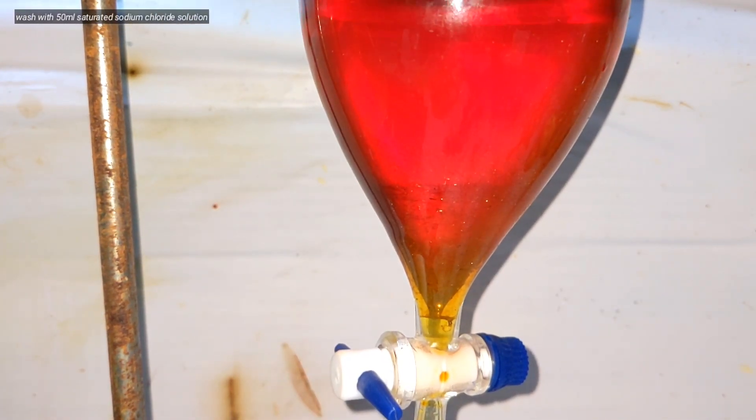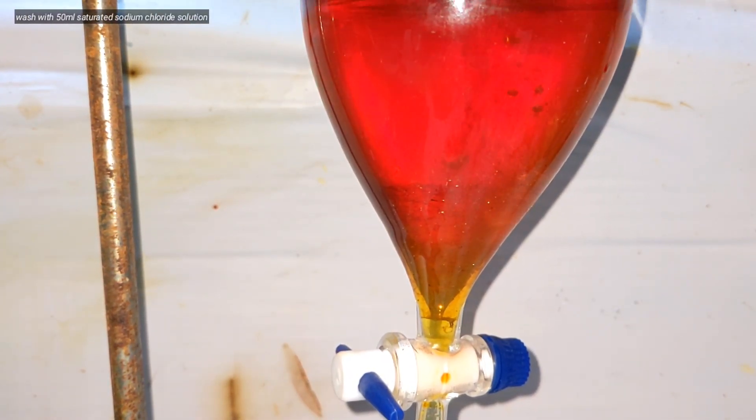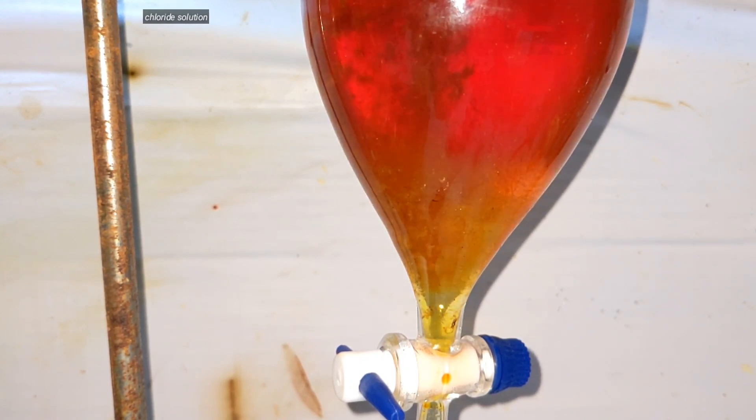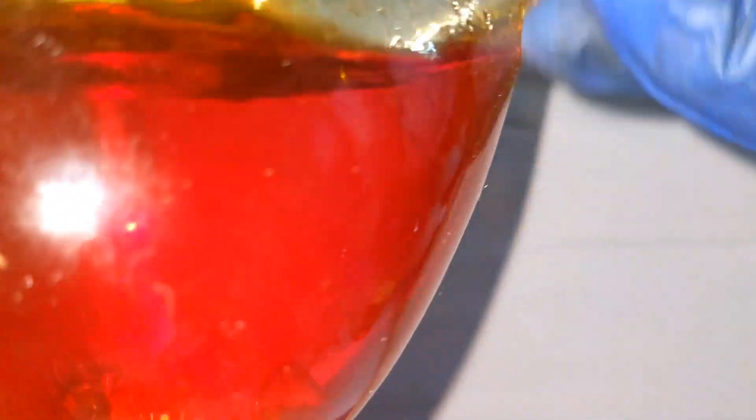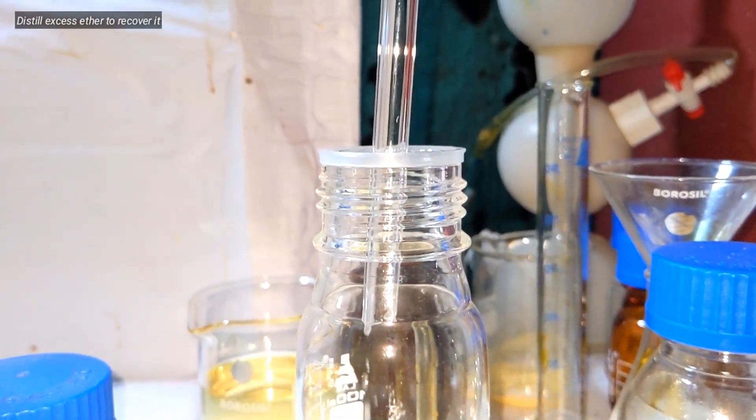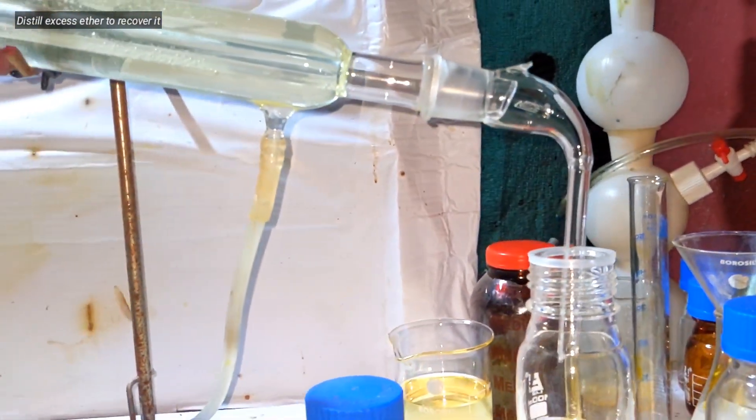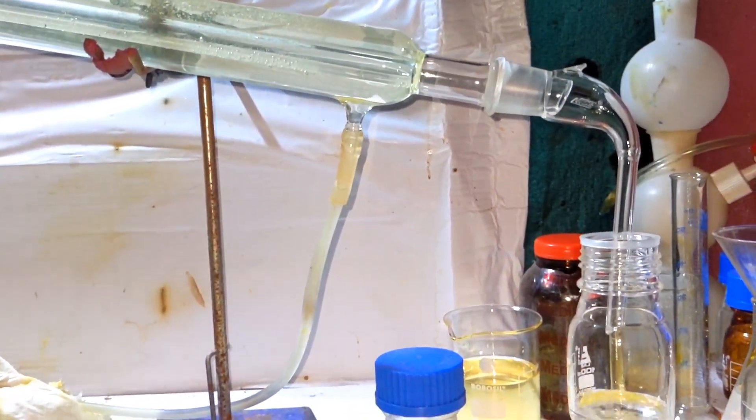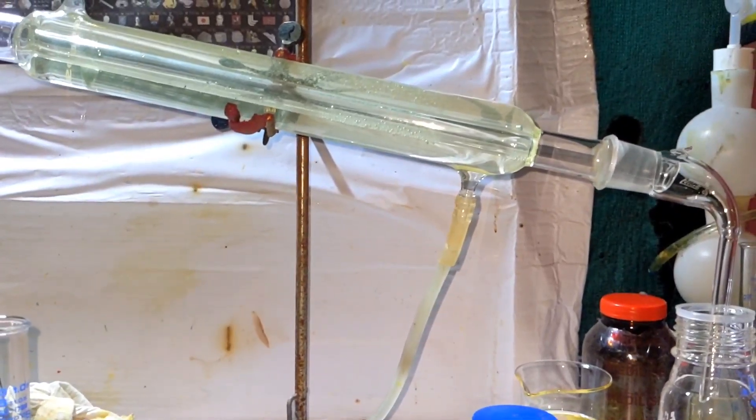The ethereal layer was then washed with 50 milliliters of saturated sodium chloride solution and the solution was then drained. The diethyl ether solution was distilled to recover most of the compound. I collected around 120 milliliters of diethyl ether.